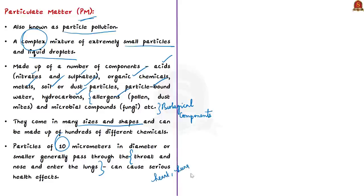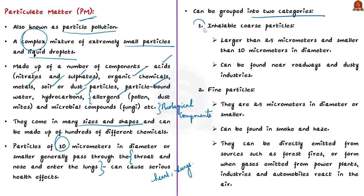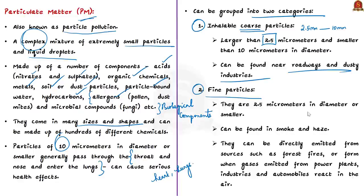Particle pollution can be grouped into two categories. The first consists of inhalable coarse particles — found near roadways and dusty industries — which are larger than 2.5 micrometers and smaller than 10 micrometers in diameter. The second type is fine particles, found in smoke and haze, ranging to about 2.5 micrometers in diameter or smaller. These fine particles can be directly emitted from sources like forest fires or formed when gases from power plants, industries and automobiles react with air.